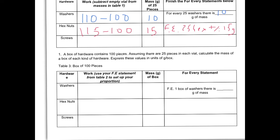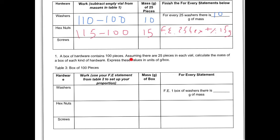I'm just going to do the washers — you can do the rest. This says a box of hardware contains 100 pieces. Assuming there are 25 pieces in each vial, calculate the mass in grams per box. So for every 25 washers there is 10 grams. I want this for 100 washers, not 25, so that's times four. This gives 40 grams — for every one box there is 40 grams.